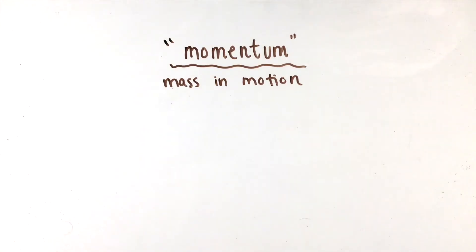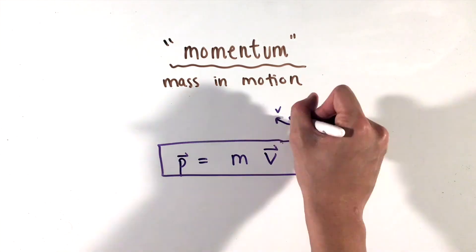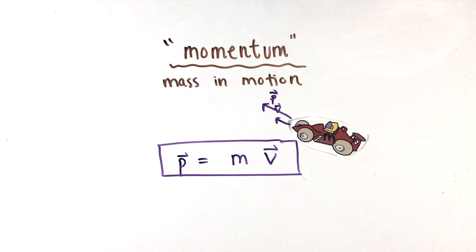Denoted usually with the lowercase letter p, the momentum of an object is defined as its mass times its velocity, and is a vector that points in the same direction as the object's velocity.